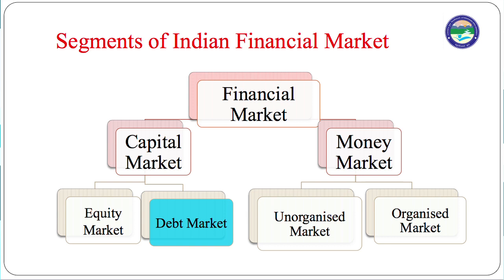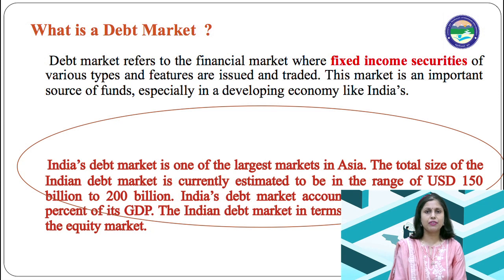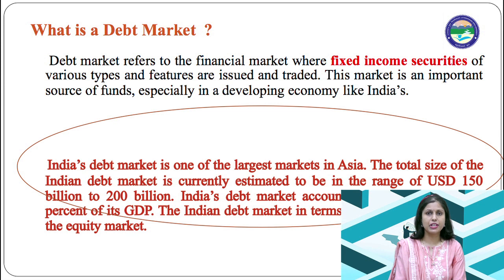Debt market is comparatively less risky than the equity market. Debt market refers to the financial market where fixed income securities of various types and features are issued and traded. Fixed income securities are those securities where investors get fixed income in the form of interest annually and semi-annually. This market is an important source of funds, especially in a developing economy like India.